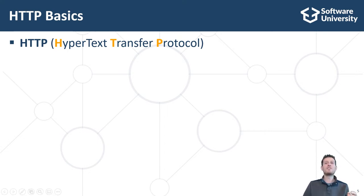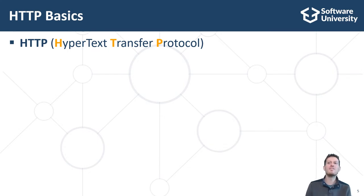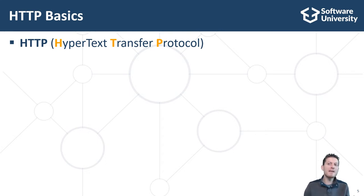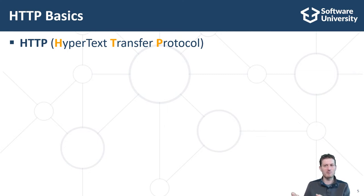Let's first explain what a protocol is. A communication protocol is a set of rules which defines how two or more parties talk to each other. It defines the format of the messages exchanged and their semantics. The protocols in programming are languages used to communicate between machines. Like human languages, protocols have syntax which specifies the structure and commands, and semantics which specifies their meaning.